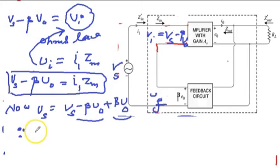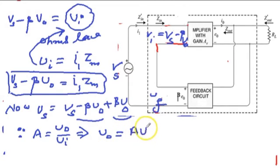But you know that the gain of the amplifier is A, which equals output voltage over input voltage. Output is V0 and input is Vi. So V0 becomes A into Vi.